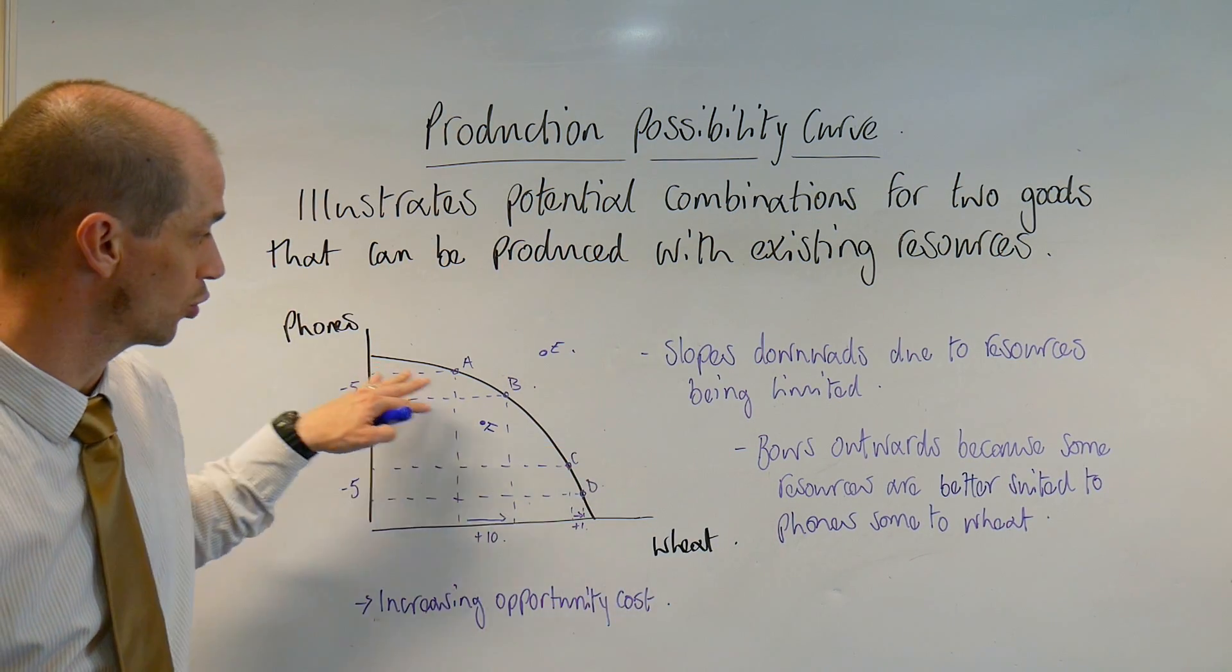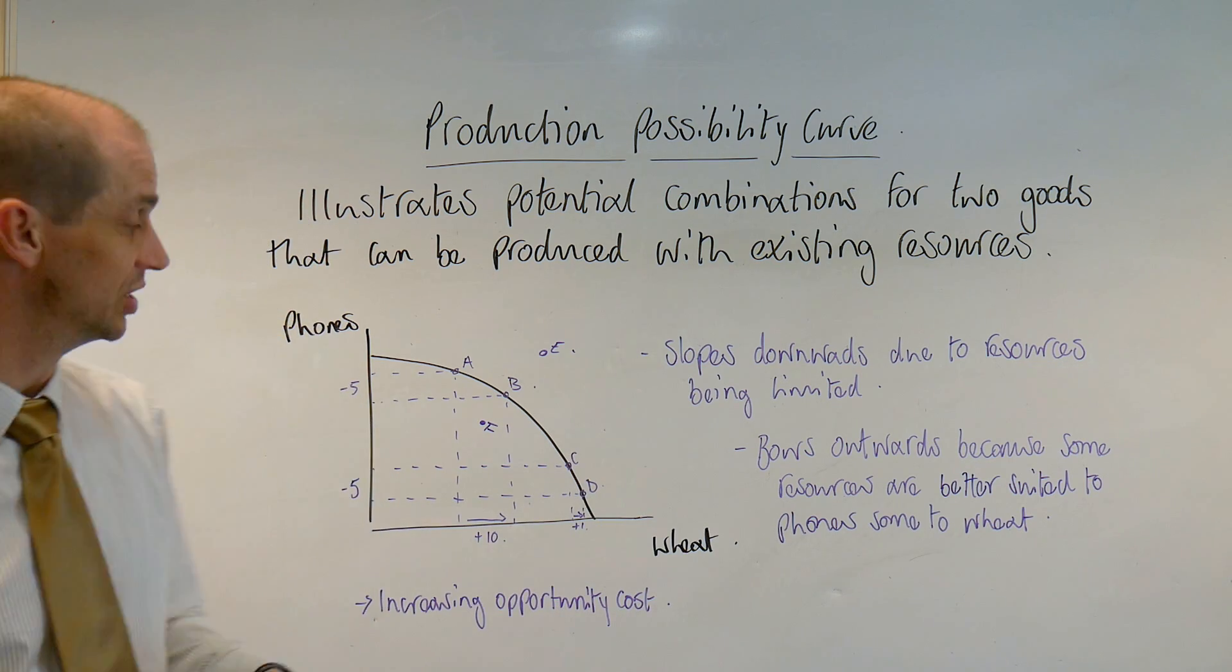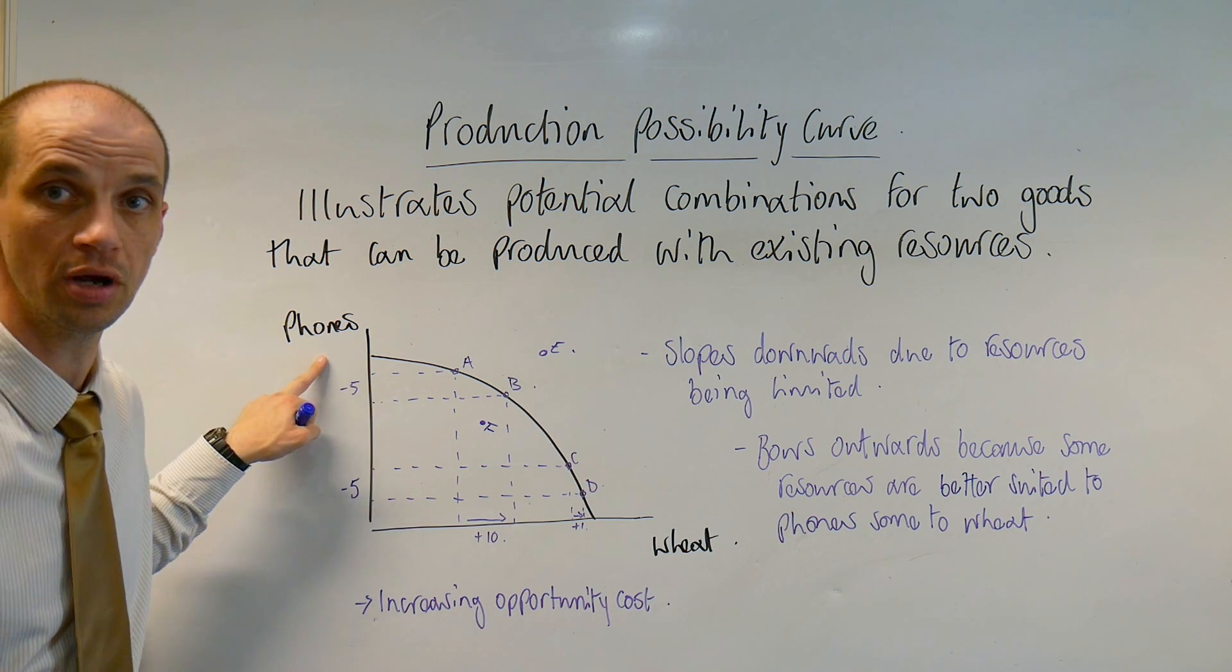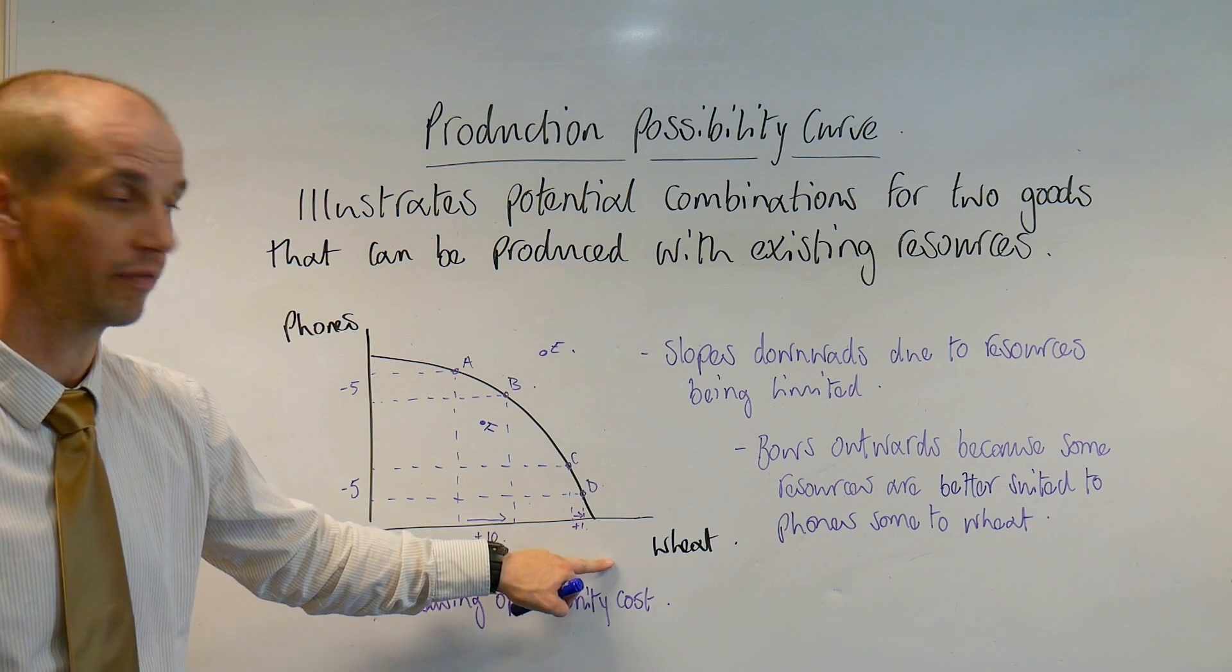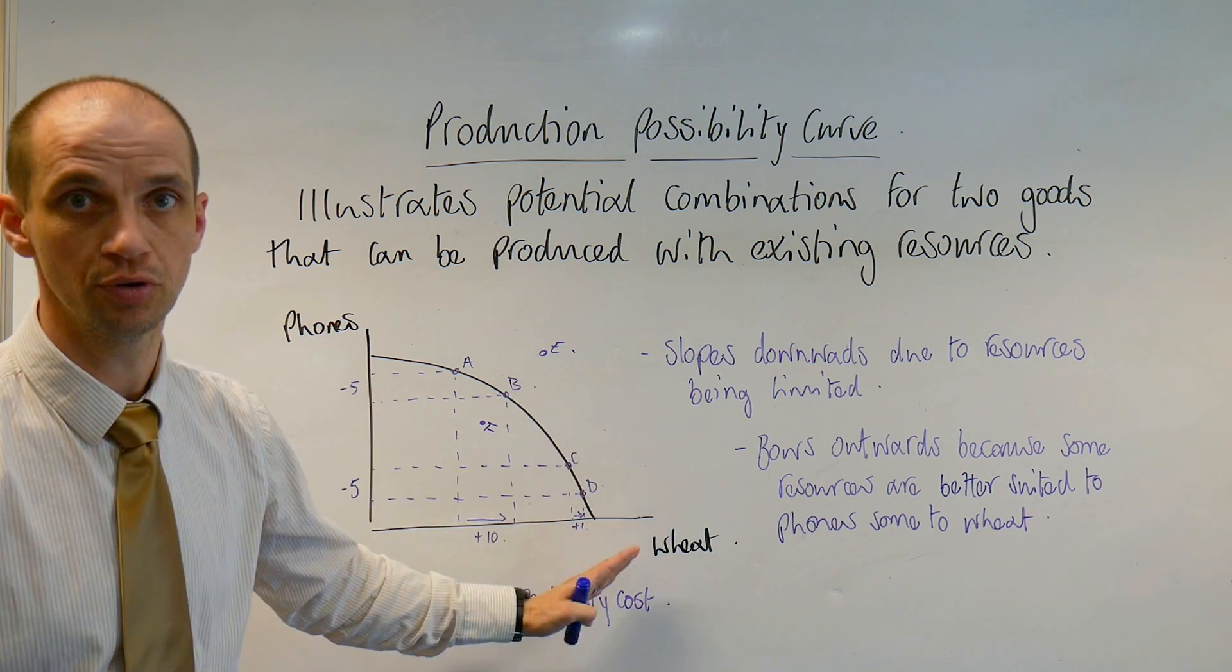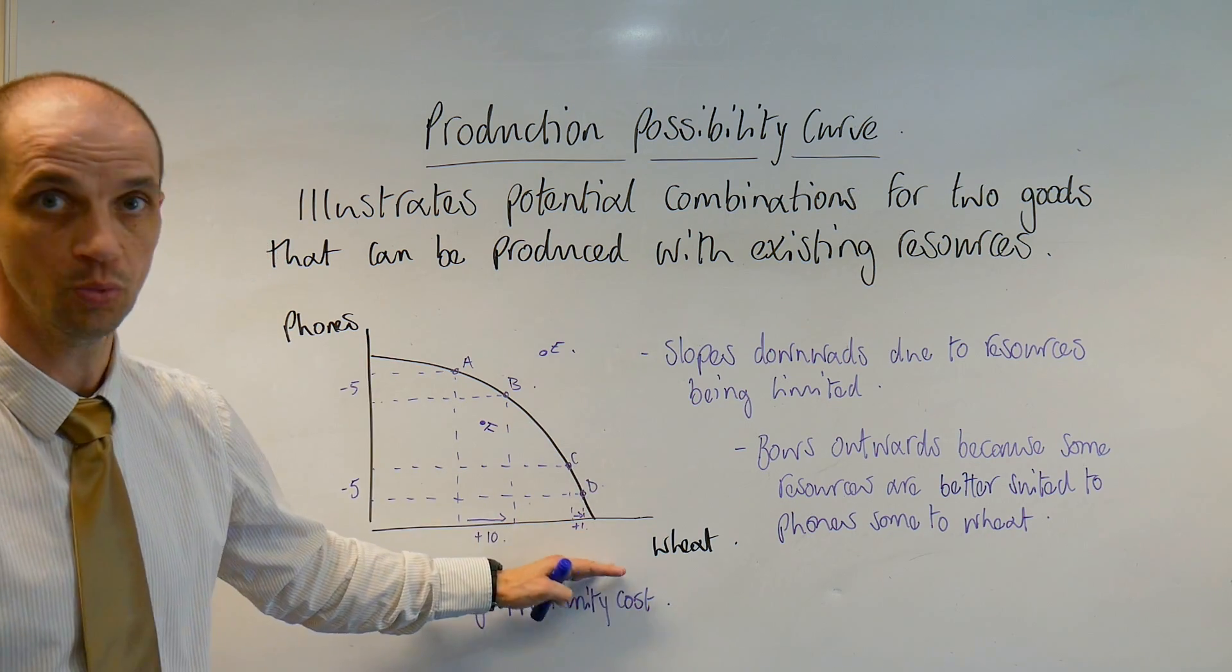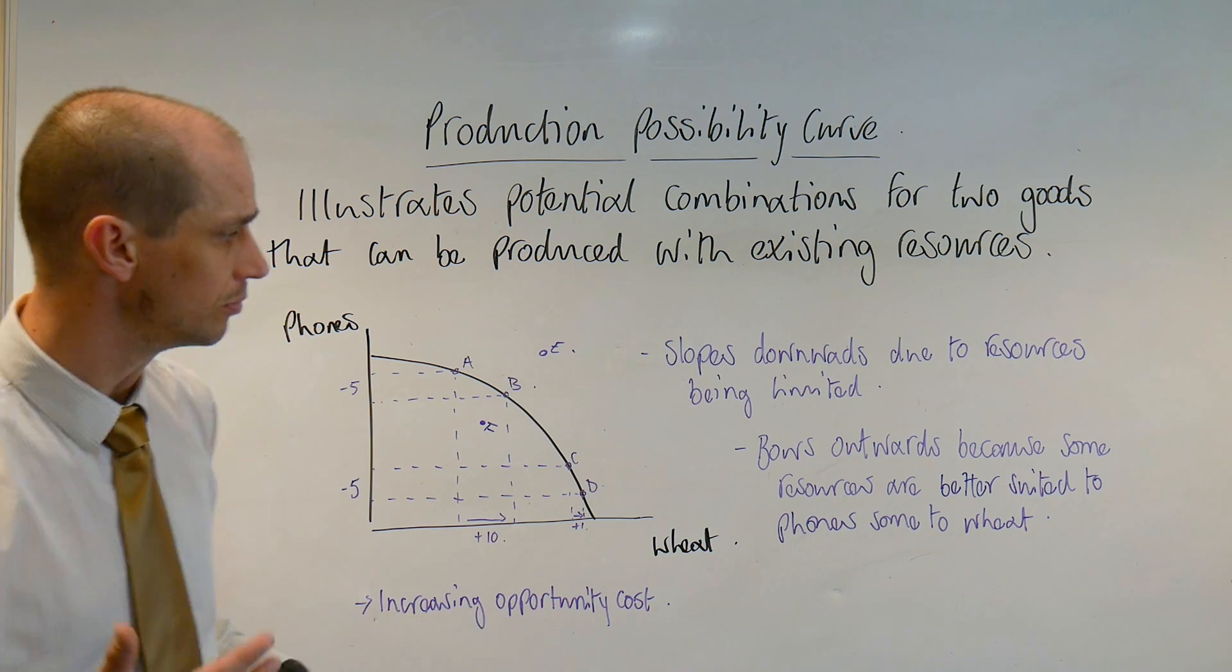Moreover, we can see that this one that I've drawn out here bows outwards and this is because some resources are better suited to the production of phones than they are in the terms of producing wheat. So some factors of production will be better off producing wheat, some would be better off producing phones.